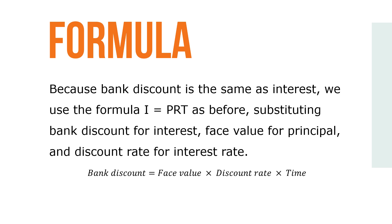Because bank discount is the same as interest, we use the formula I equals PRT as before, substituting bank discount for interest, face value for principal, and discount rate for interest rate. So bank discount equals face value times discount rate times time. Note: use ordinary interest — 360 days — for simple discount notes whose terms are stated in days.